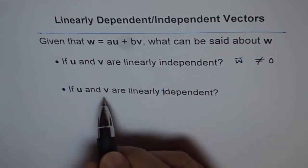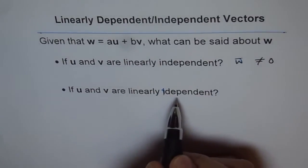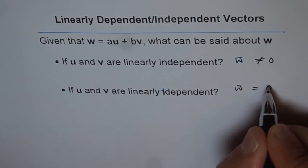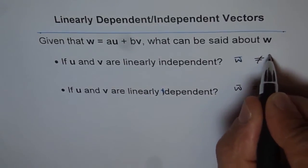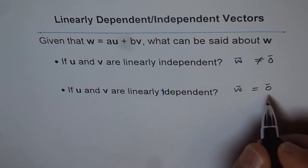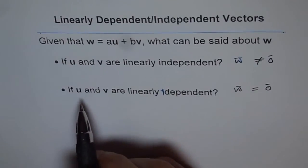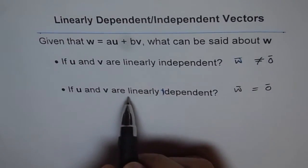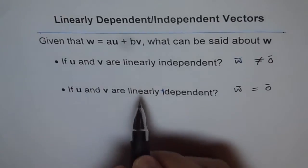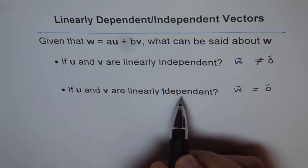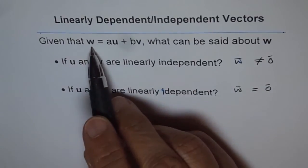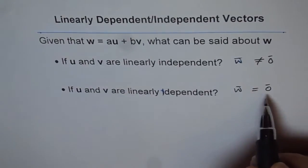But if u and v are linearly dependent, then w is equal to a zero vector. As you know, if u and v are linearly dependent, then they are scalar multiples, and so we will get that as 0.